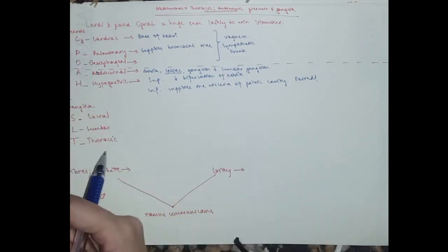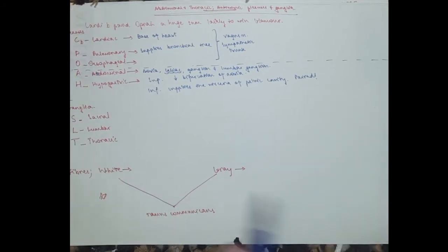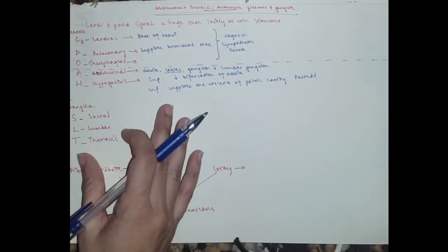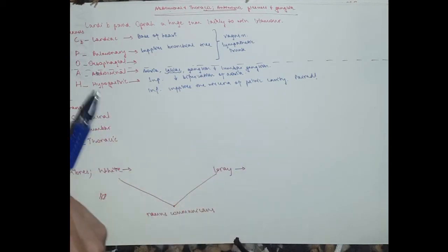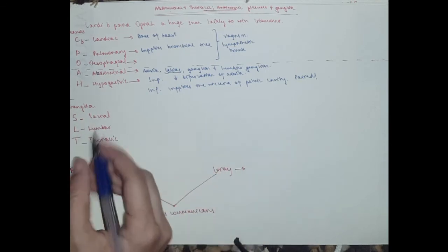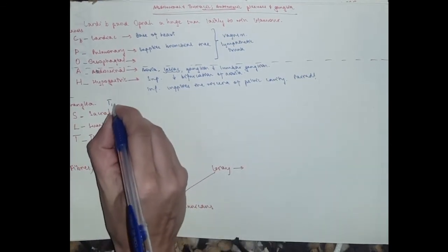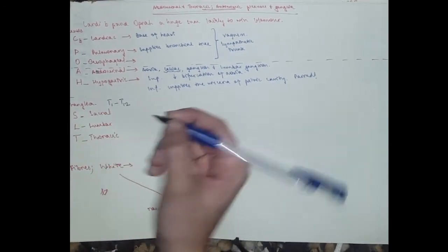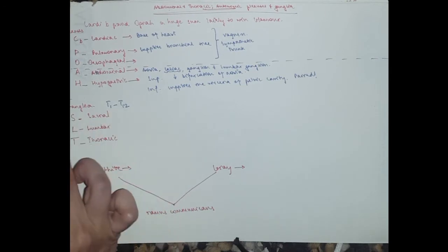So it's a paired structure. It's paired and it lies on both sides of the rectum in men, or the rectum and the vagina in women. Okay, so these are the paravertebral ganglia.